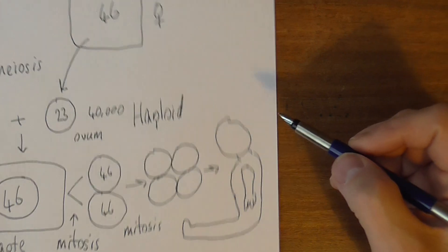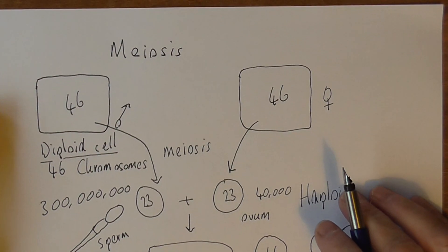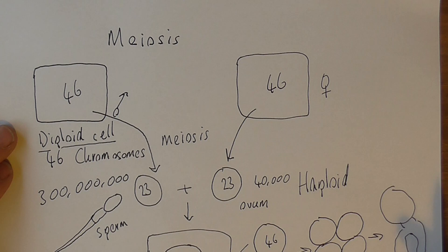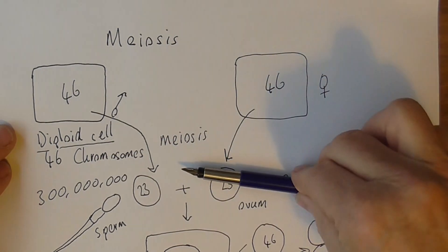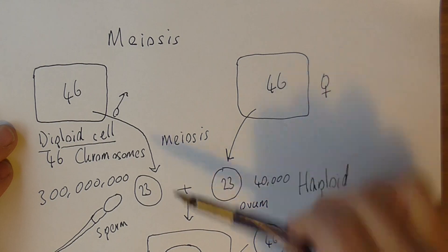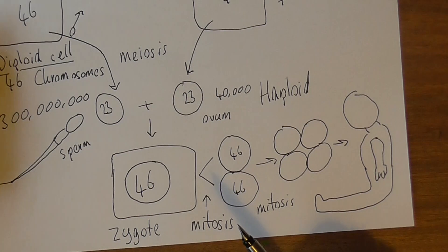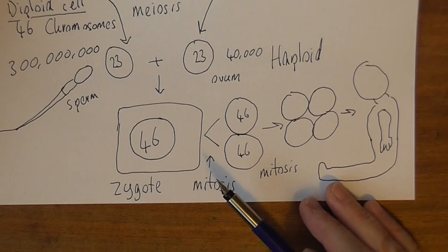So what we see is meiosis is absolutely essential for two reasons. The first reason is it produces the haploid cells, because we don't want to double the chromosome number every generation. That's fairly obvious.